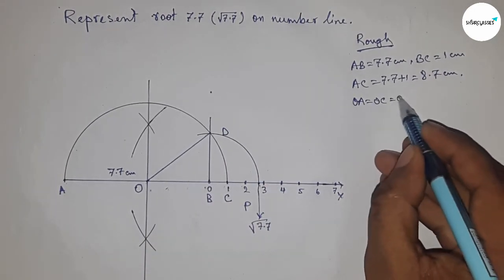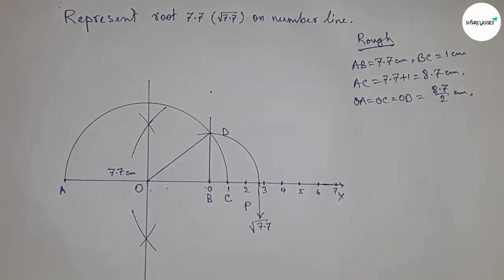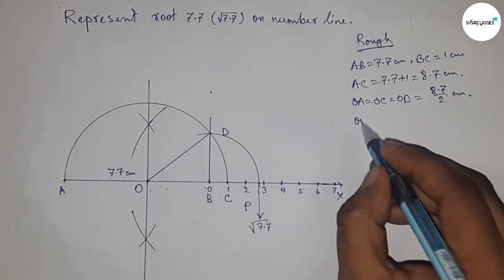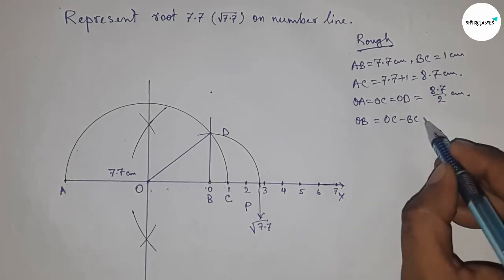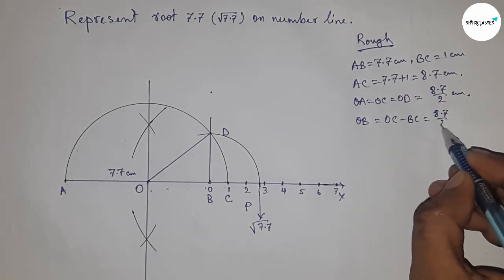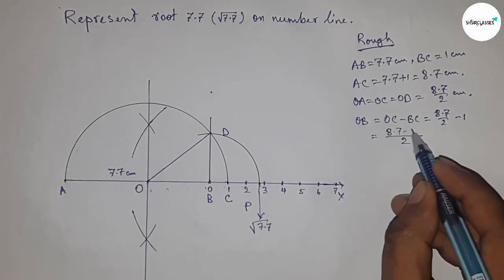The length OB = OC - BC. Putting the values of OC and BC and calculating, we get OB = 6.7/2 cm.